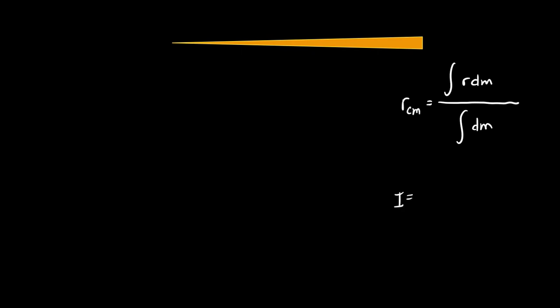We have center of mass, which is a distance, and it is the integral of r dm divided by the integral of just dm. In class I might have said that it's just the total mass at the bottom, but as we don't know what the total mass is, we will have to do integration to figure out the mass. And then moment of inertia is an integral of r squared dm.